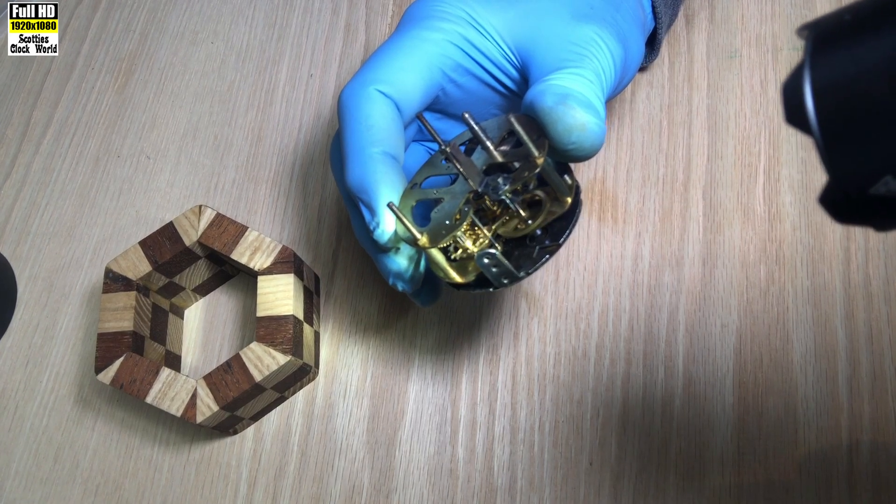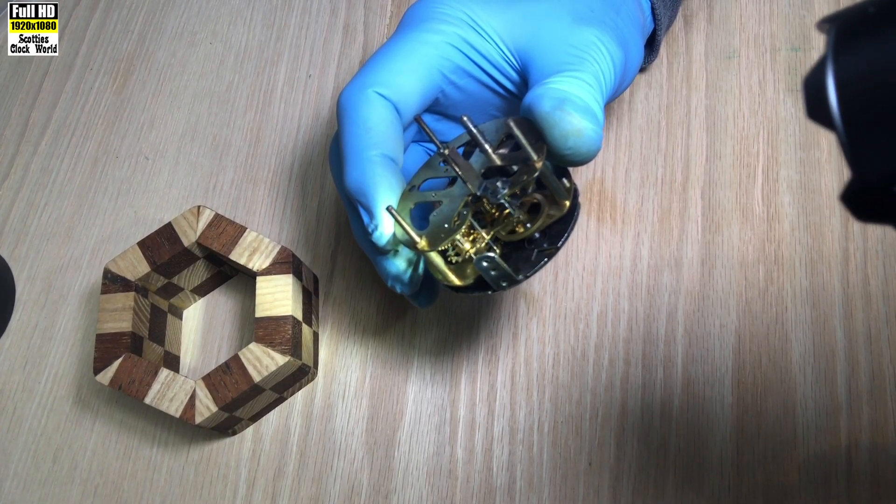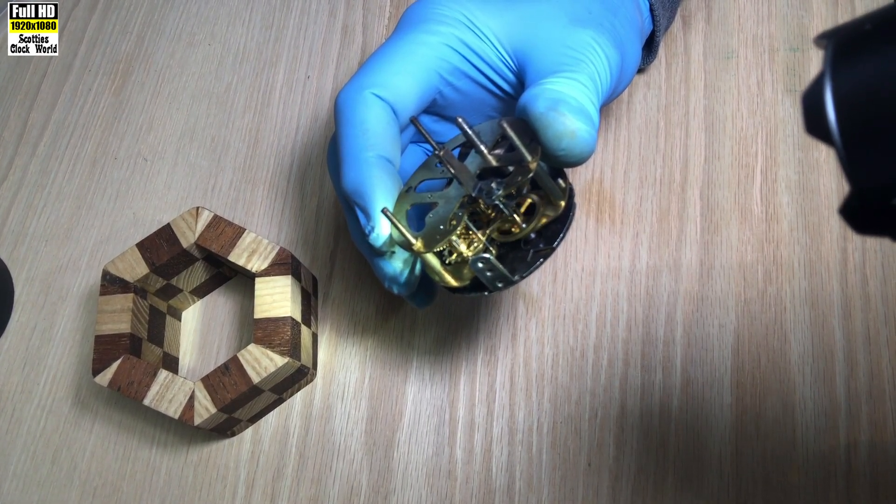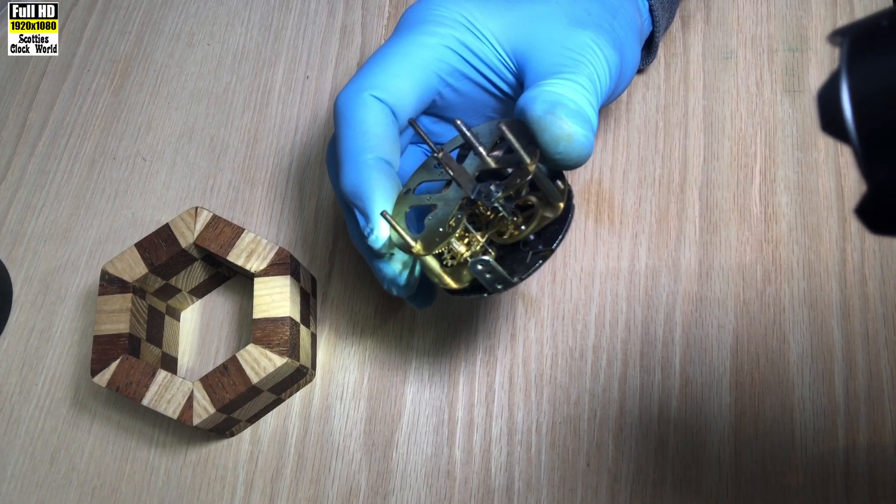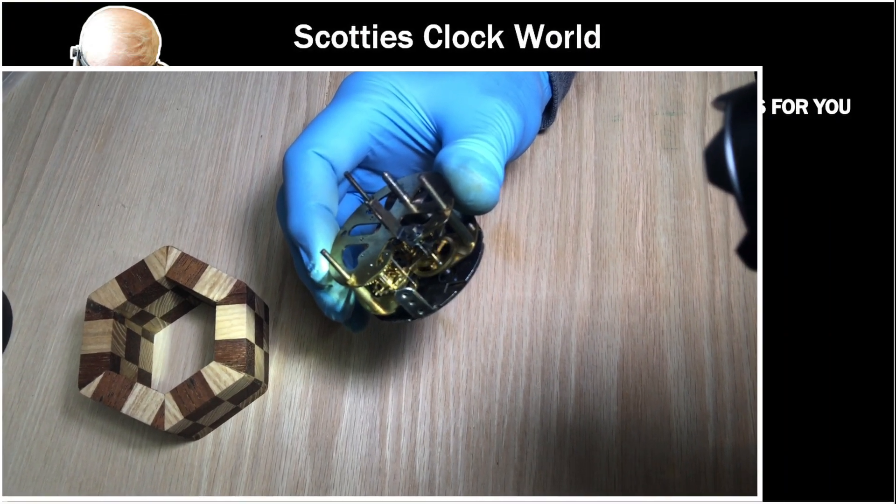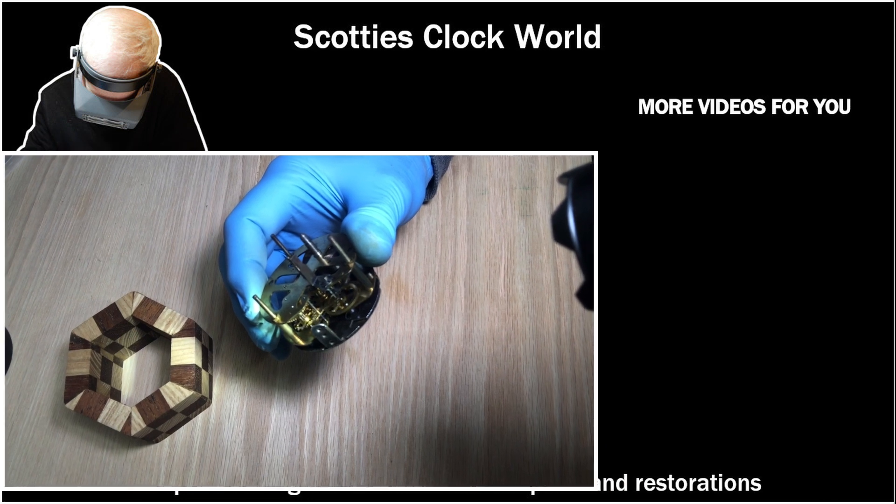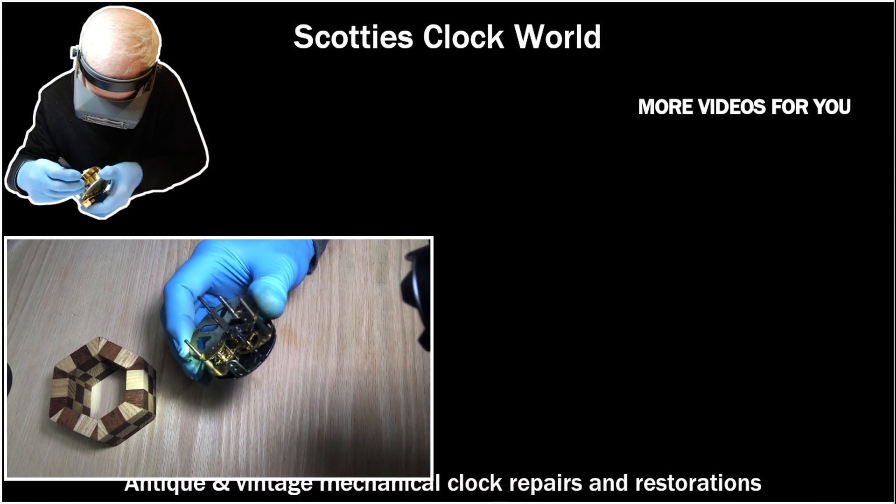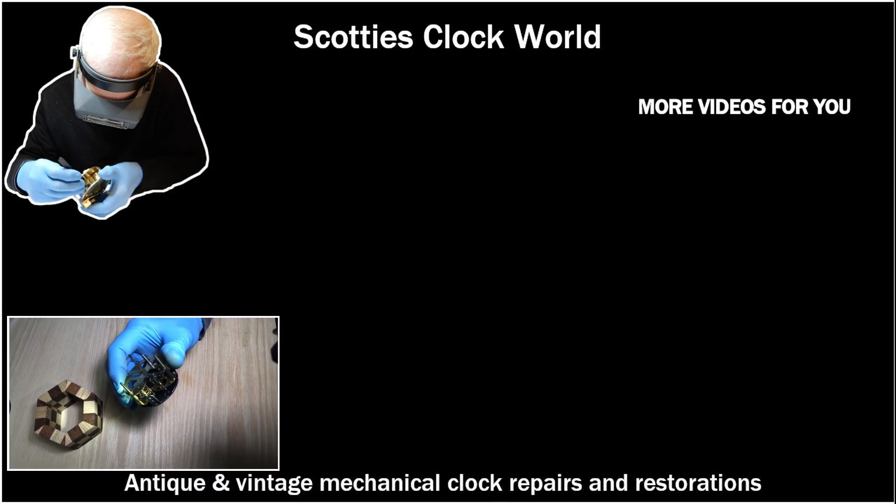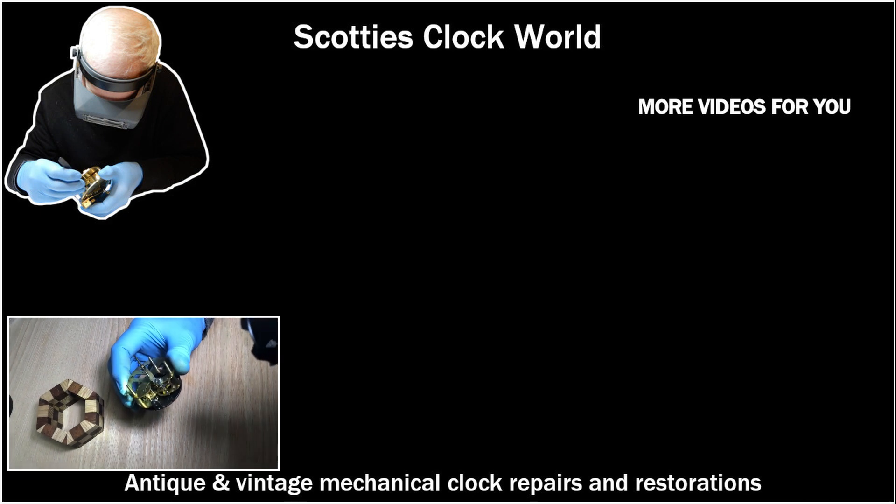Here you can see quite clearly the escape wheel turning, driving the pin pallet, the balance wheel spinning freely with the hairspring on it.